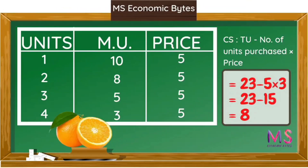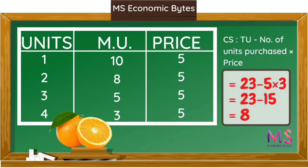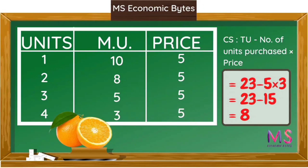Now let us understand consumer surplus through a tabular representation. In the table, there are four units of orange, with marginal utility given and a price of 5. Consumer surplus is derived from the law of diminishing utility, which states that as we purchase more units of a good, its marginal utility goes on decreasing. For the first unit the marginal utility is 10, for the second it is 8, for the third it is 5, and for the fourth it is 3.